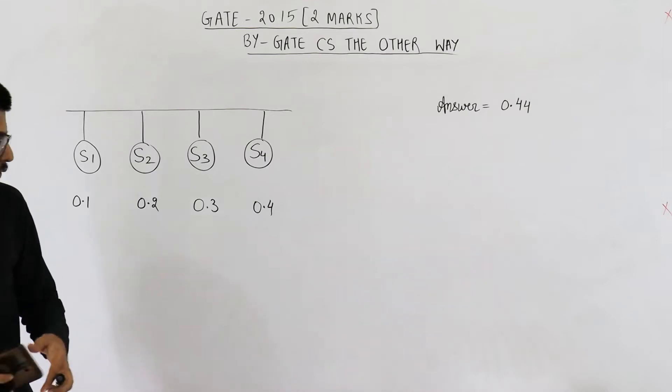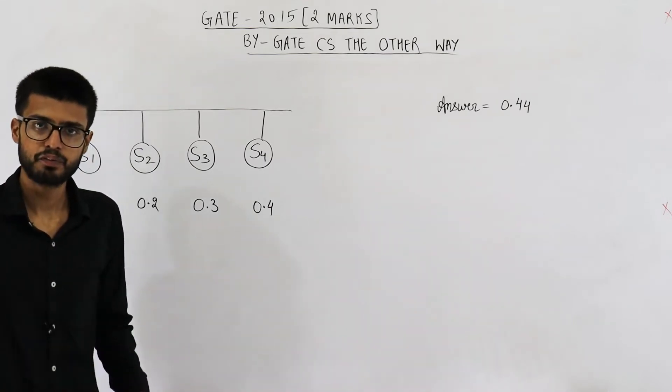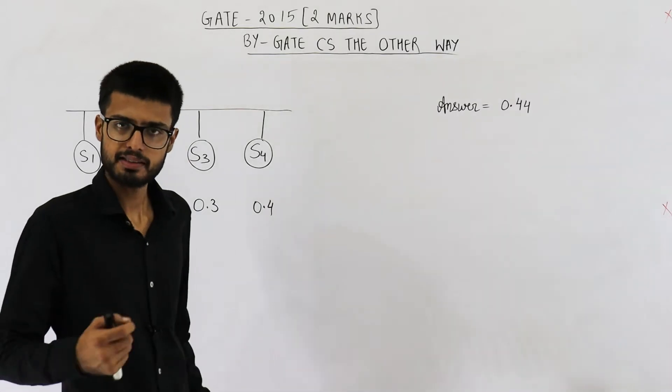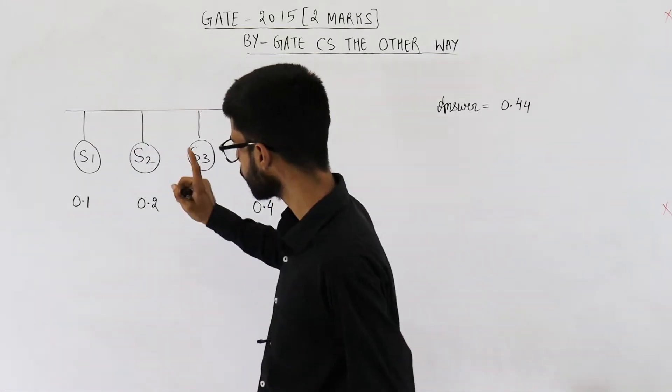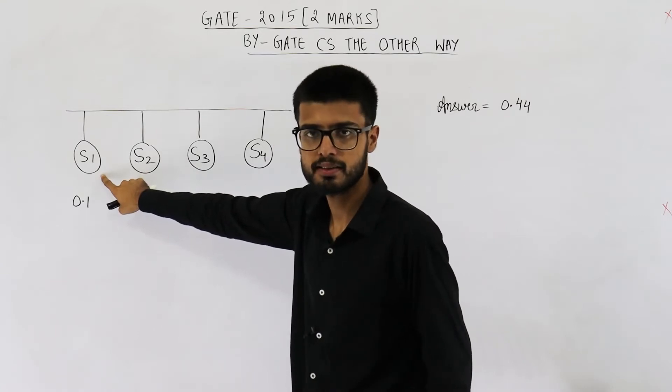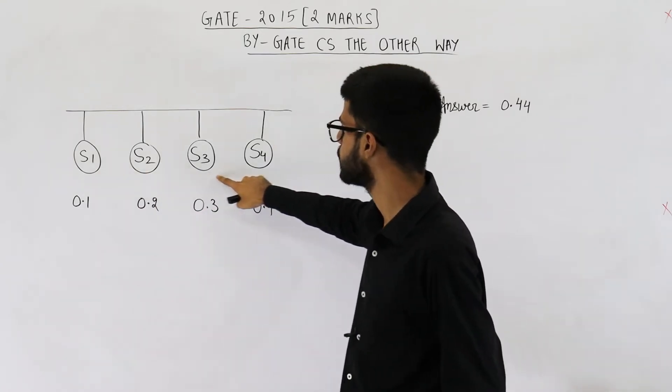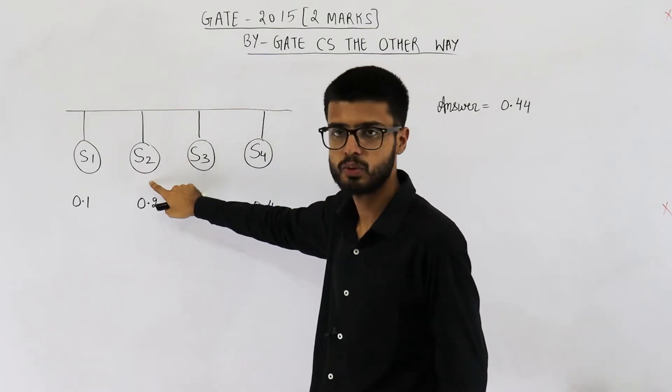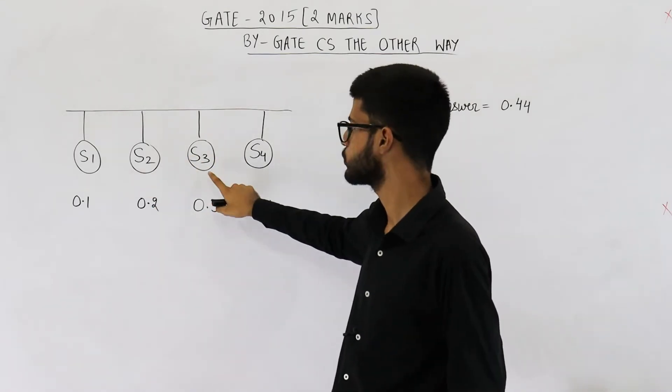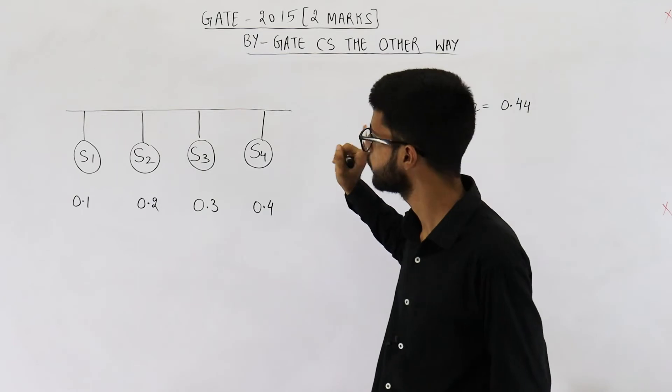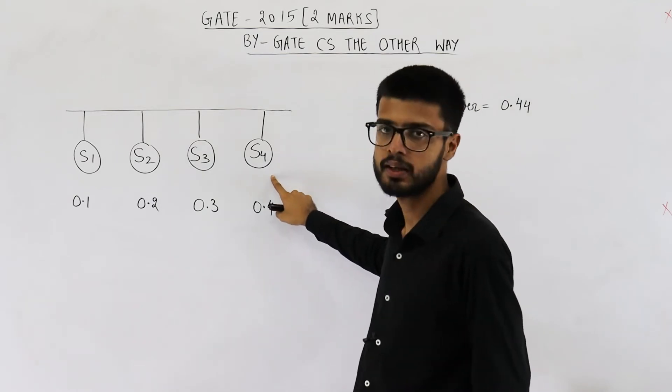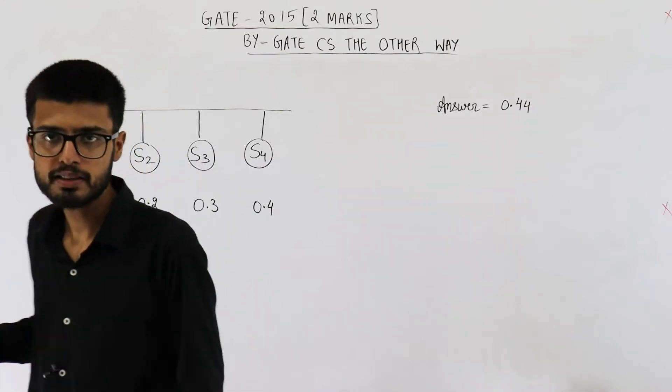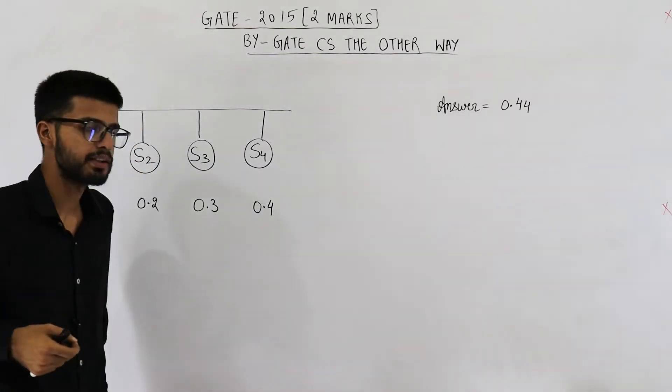So we want to send a frame in first slot such that a collision does not occur. This can be done in four ways. First way is only S1 is sending a frame, none of these three is sending frame. Second way is only S2 is sending data. Third way is only S3 is sending data. And fourth way is only S4 is sending data.